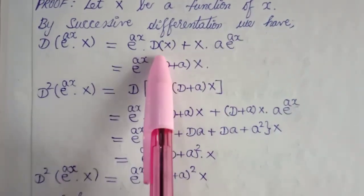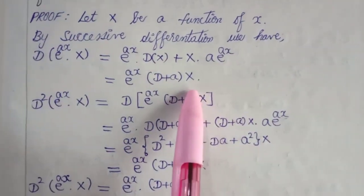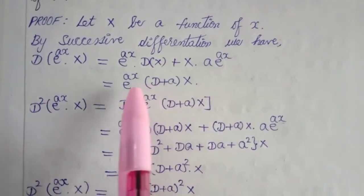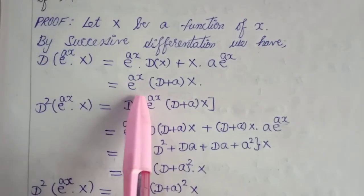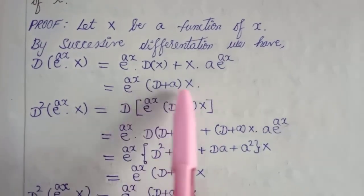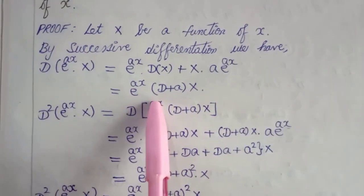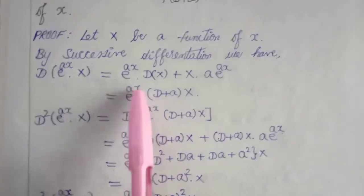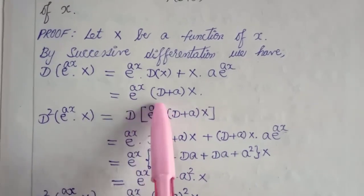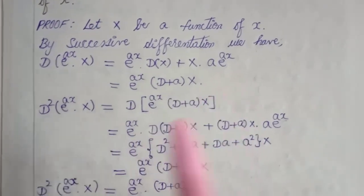Now from the first two terms, χ is common and e^(ax) is also common. So taking e^(ax) into χ common, we get e^(ax) into (D plus a) into χ. This is the first derivative.